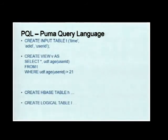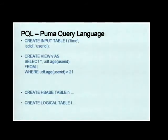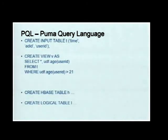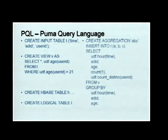A key feature of Puma compared with other systems is the language. Similar to how we built Hive on top of MapReduce at Facebook, we have a SQL-like language to define the input stream and its columns. We can define views on top of that with filters, which support user-defined functions — for example, a UDF for remote lookup. We can create an HBase-backed table and create a logical table on top of it for storing aggregation logs.